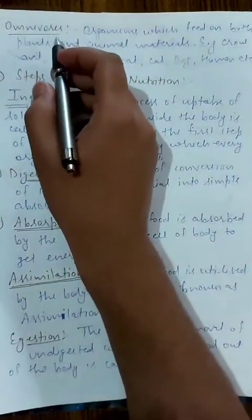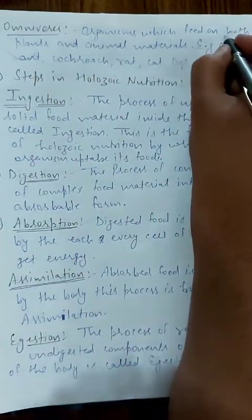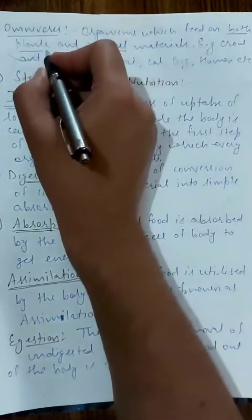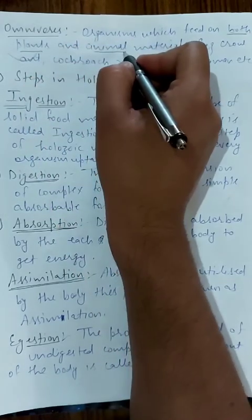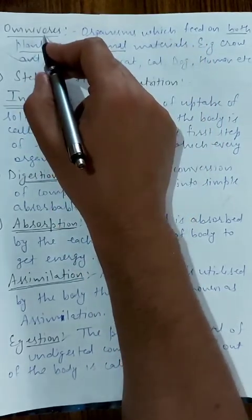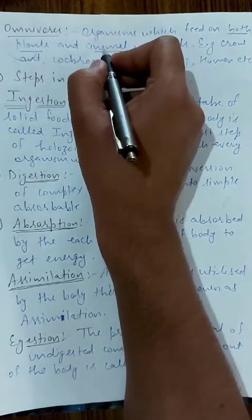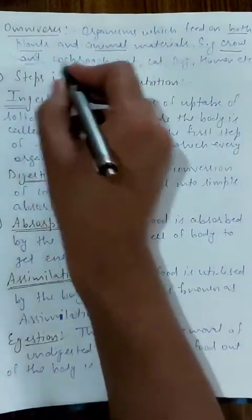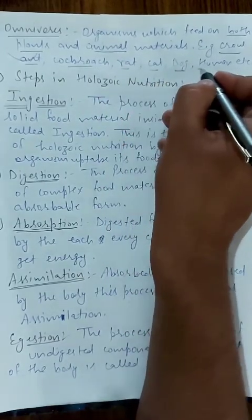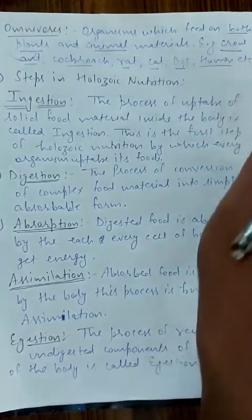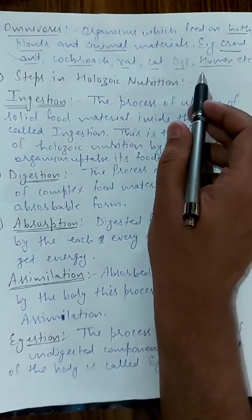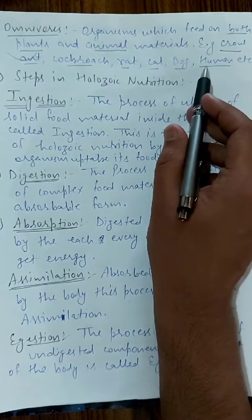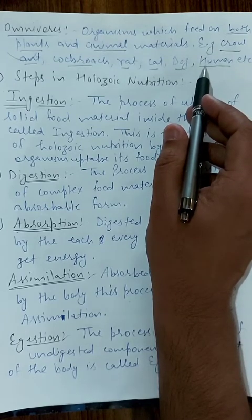The third type is omnivores — organisms which feed on both plant material as well as animal material. They can consume both vegetarian and non-vegetarian food, and that is why these are known as omnivores.